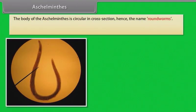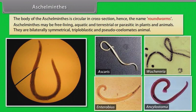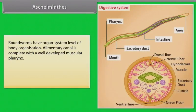Aschelminthes: The body of Aschelminthes is circular in cross-section, hence the name roundworms. Aschelminthes may be free-living, aquatic and terrestrial, or parasitic in plants and animals. They are bilaterally symmetrical, triploblastic and pseudocoelomate animals. Roundworms have organ system level of body organization.